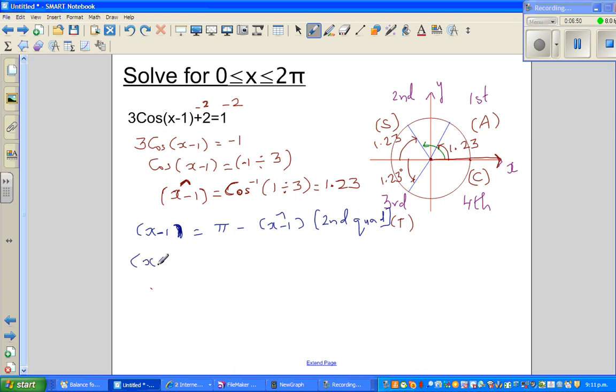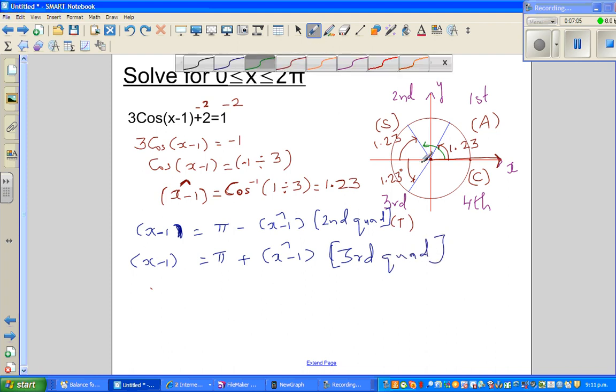And when it's in the third quadrant, it's π plus your reference angle. So this is in your third quadrant. If you don't want to remember the formula, this is what I'm talking about. You're talking about this angle. And this angle is 180, this much is 180 or π, plus 1.23. That's this whole angle. So let's substitute the value.